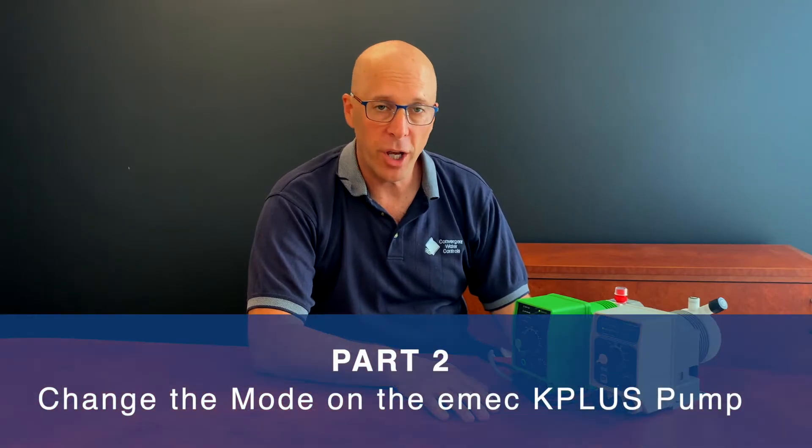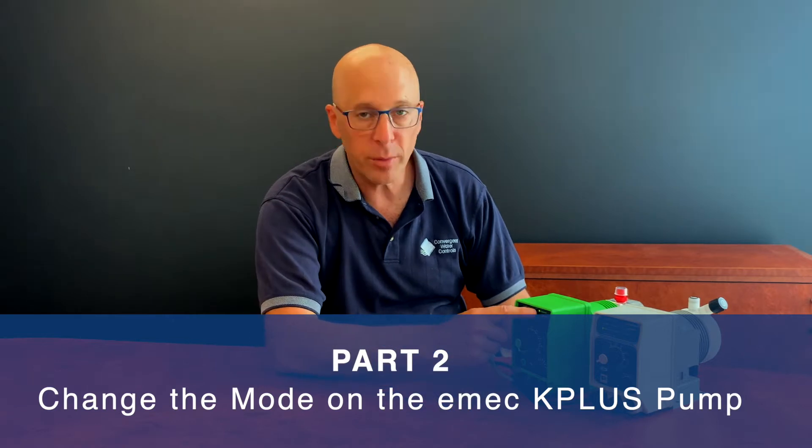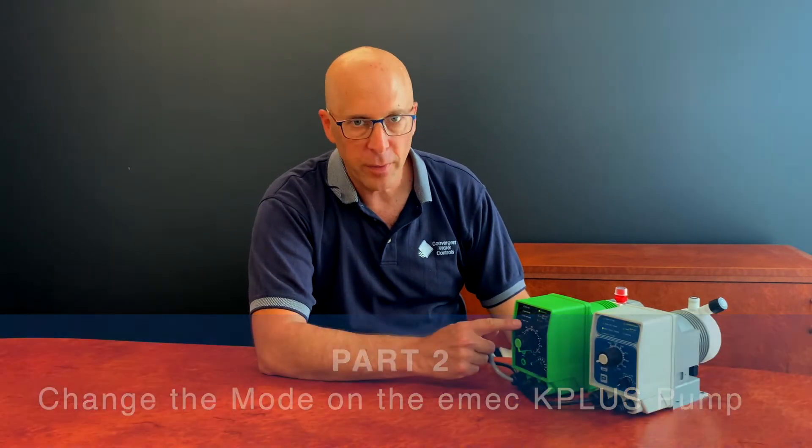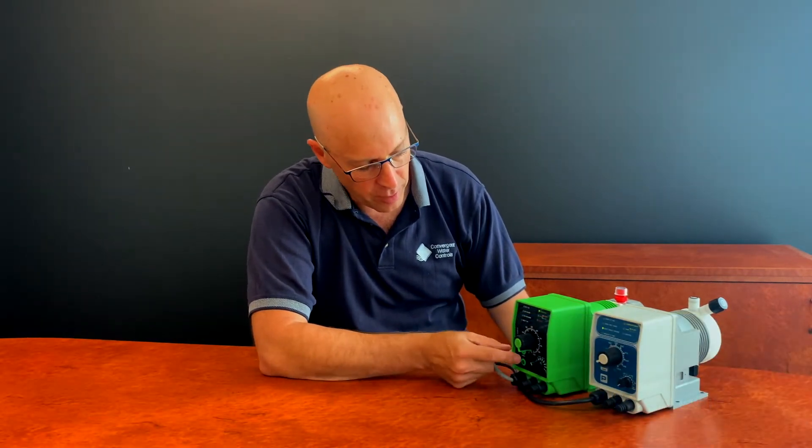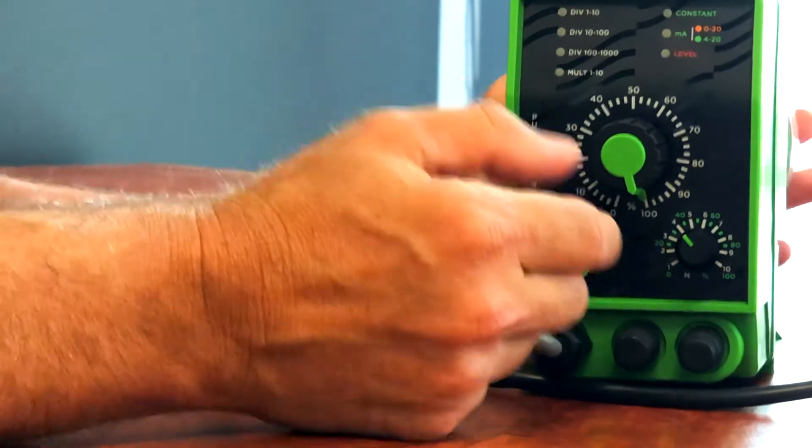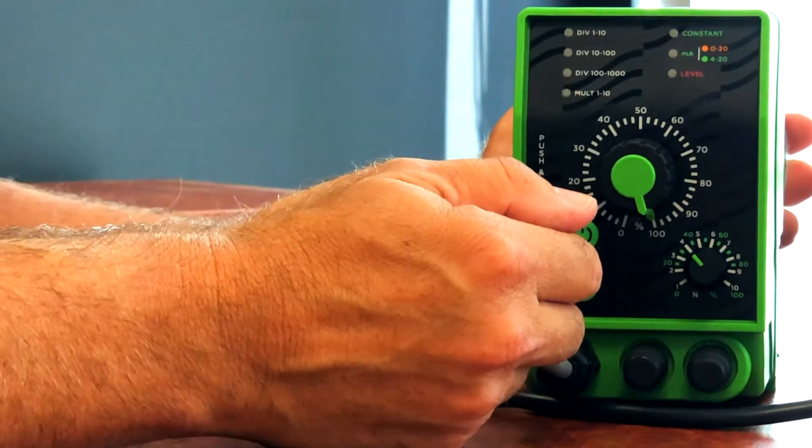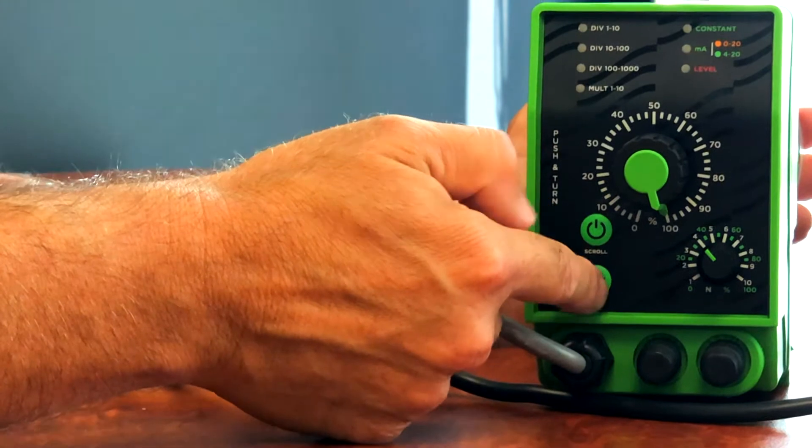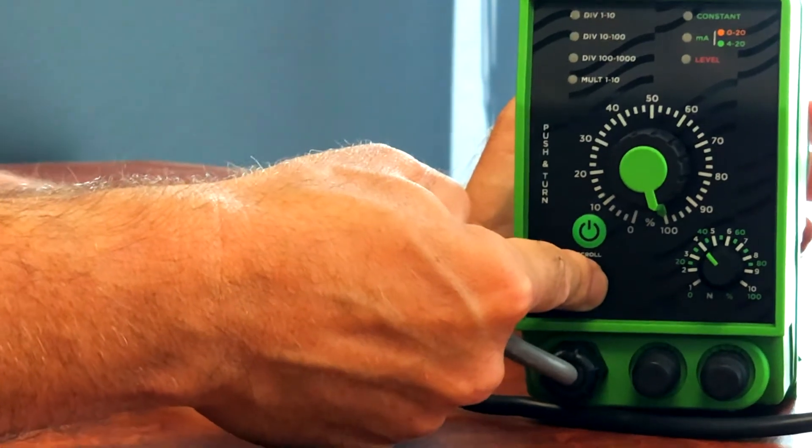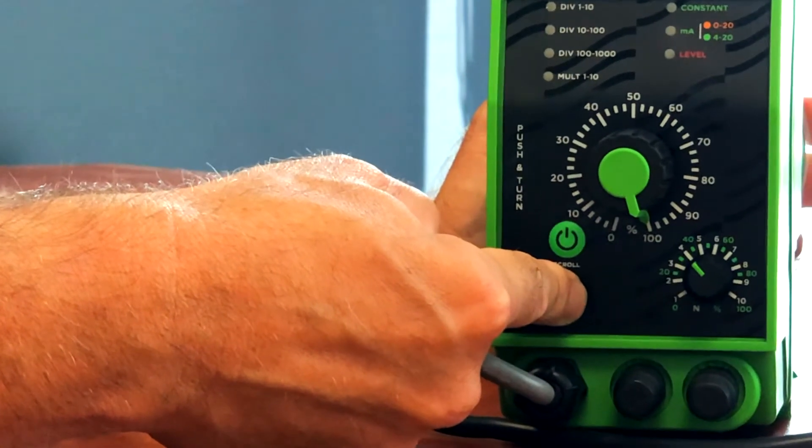I'm now going to explain how to change the mode on the pump from constant mode to multiply mode. So the first step is to press the power button once, which puts the pump into standby. We then hold the programming button, or the settings button, down constantly until all the LEDs flash.